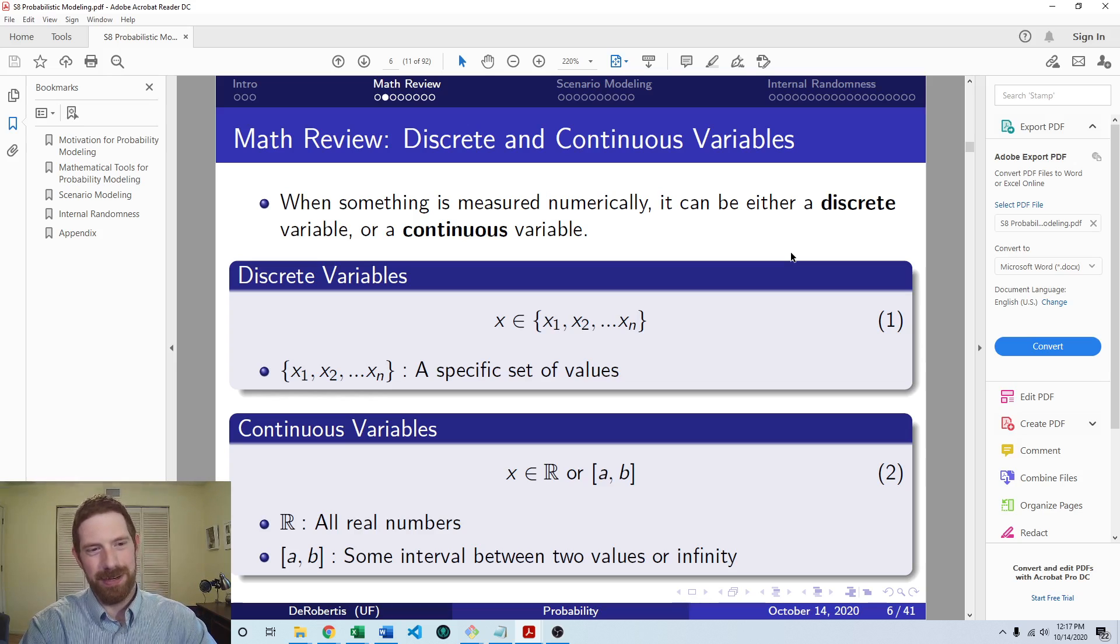And then discrete variables, taking one of a specific set of values. So it could be something like an example is maybe a boolean variable like take the project or don't take the project, but only has two possible values. Yes, I'm taking it or no, I'm not taking it.